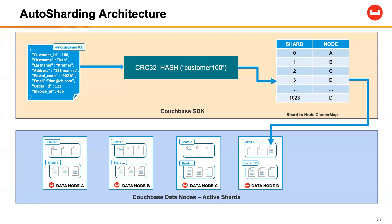For this example, customer 100 is put through the algorithm and is then placed into shard number 3. Via the shards-to-node cluster map, we then assign shard number 3 to node D. As you can see on the bottom box, shard 3 on node D is put into the Couchbase cluster on data node D. So as long as there are four data nodes within the Couchbase cluster, shard 3 or customer 100 will always be resident on node D.